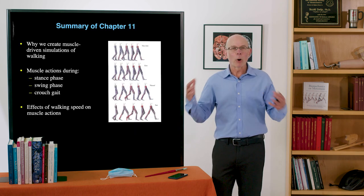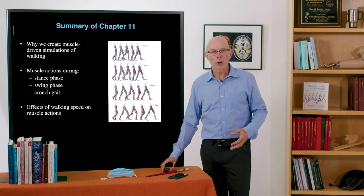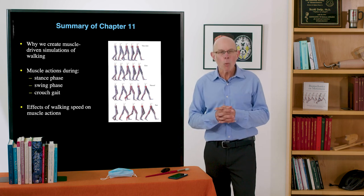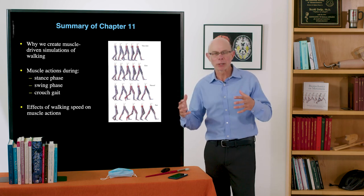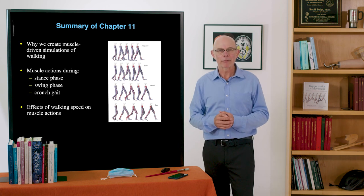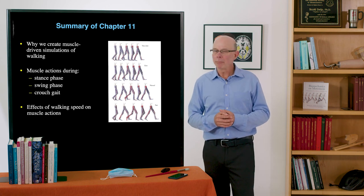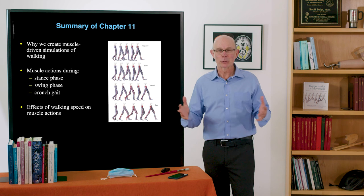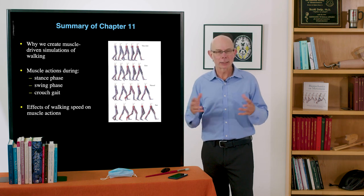So that's where we are with chapter 11. We've tried to motivate why we build simulations, looked at the stance phase, swing phase, crouch gait, and now the effects of walking speed. All of these tools are available to you. Feel free to analyze the data in as much detail as you want. Thanks very much.